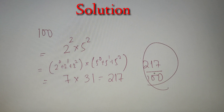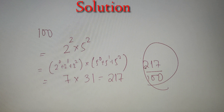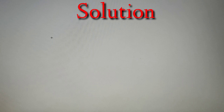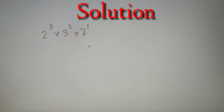You can see that this formula is very simple and can be applied to any given number. Moving on to our second example: the number given is 2³ × 3² × 7¹. Since this number is already in its prime factorized form, we can easily find its sum of factors.